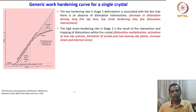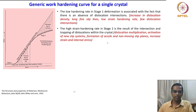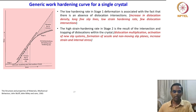The primary signatures of Stage 2 are dislocation multiplication, activation of new slip systems, formation of sessile and non-moving slip planes, and increase in strain and internal stress. These descriptors are very important. As you move to the second stage of work hardening, you see the complete contrast in dislocation and microstructural features.